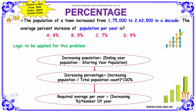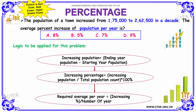Our next example is based on population, and it is an important example as it has appeared in government bank and higher studies exams. The population of a town has increased from 1,75,000 to 2,62,500 in a decade, that is 10 years. The average percentage increase in population per year has to be calculated. Options: A) 8%, B) 5%, C) 7%, D) 9%.